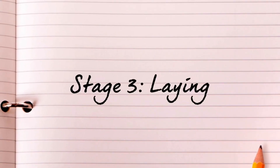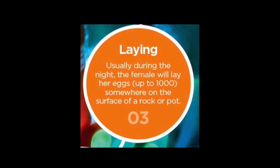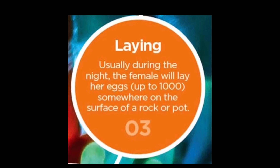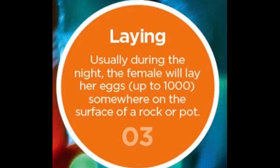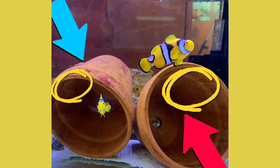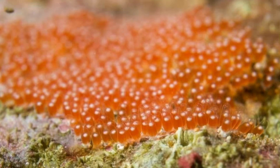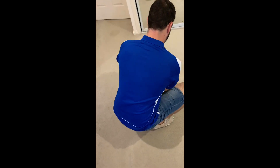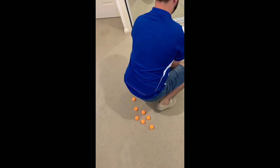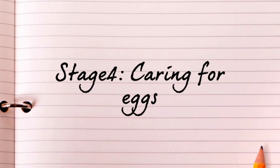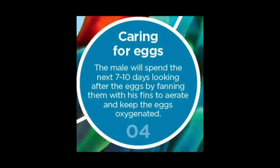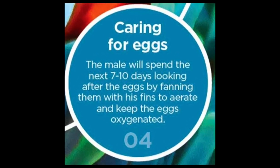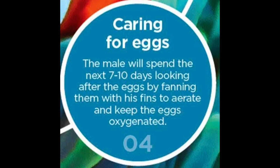Stage three is all about laying the eggs. Usually during the night, the female will lay her eggs somewhere on the surface of a rock, or in our case in our tanks, it'll be on the surface of the pot. Stage four is all about caring for the eggs — this is the male's job. The male will spend the next seven to ten days looking after those eggs by fanning them with his fins to keep plenty of oxygen up to them.